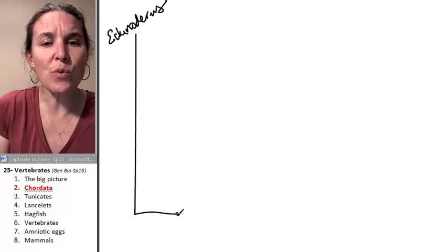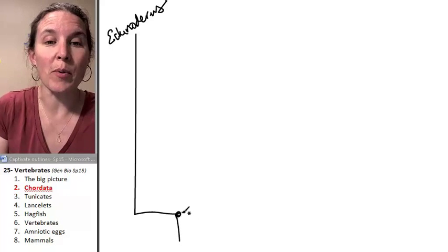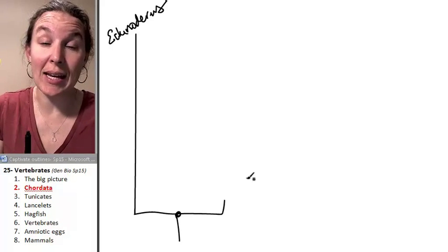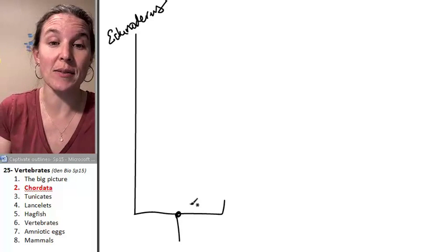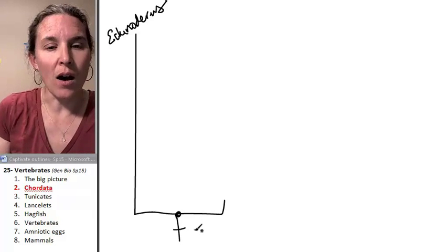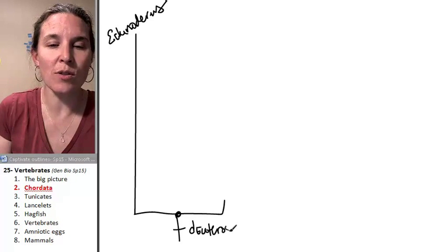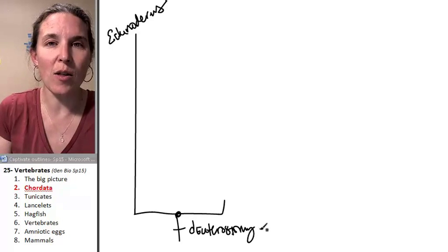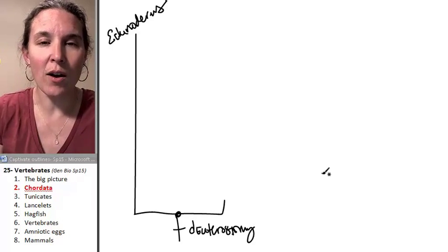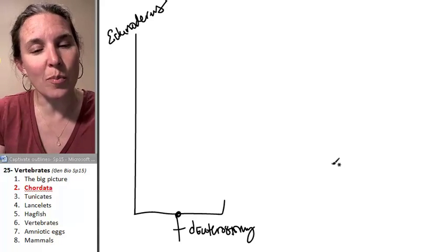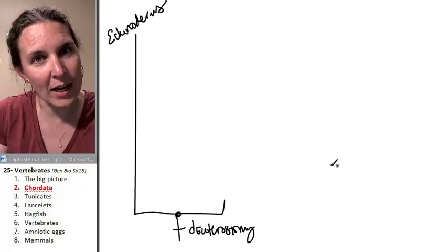So do you remember what characteristic united echinoderms and chordates? The presence of deuterostomy, the deuterostomy development plan where your blastopore, which you had when you were a tiny little thing, your blastopore became your anus.